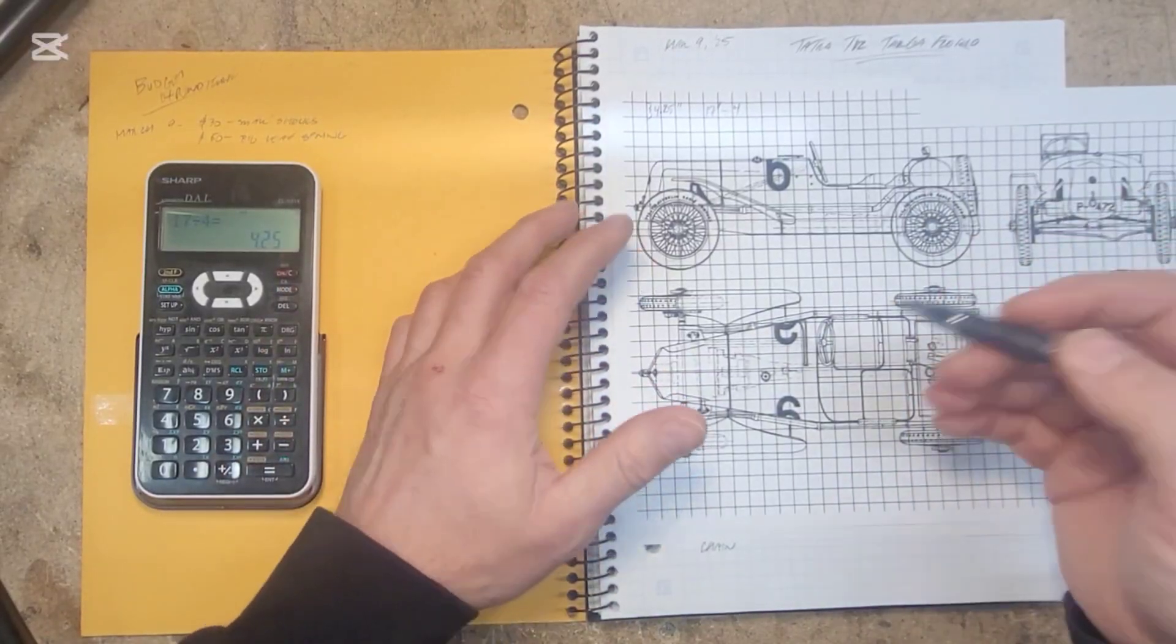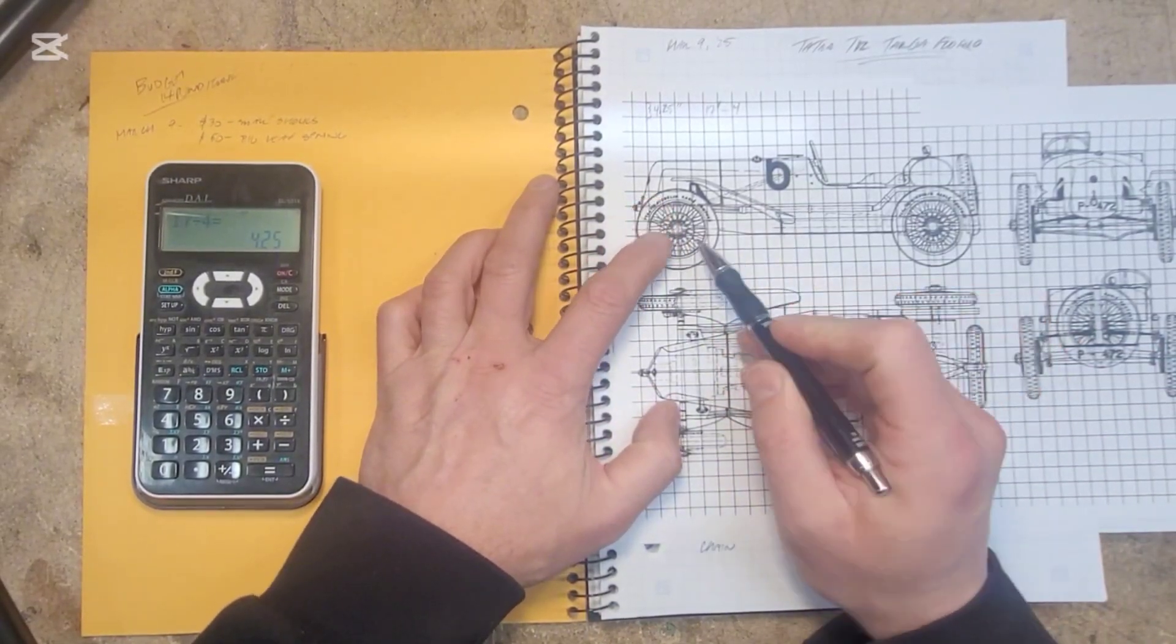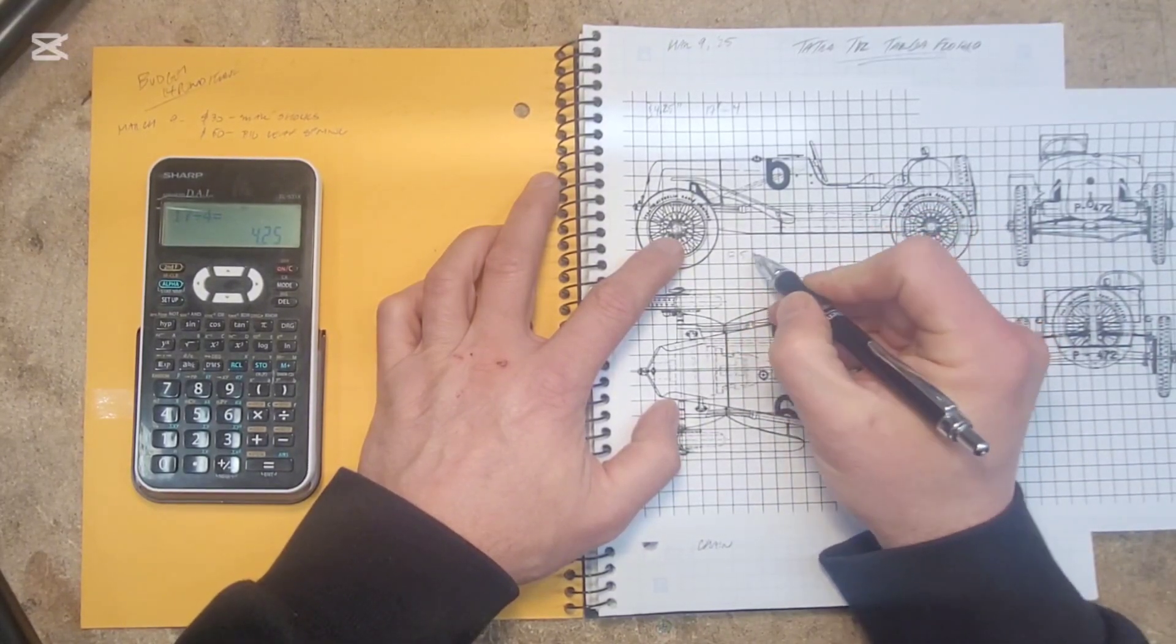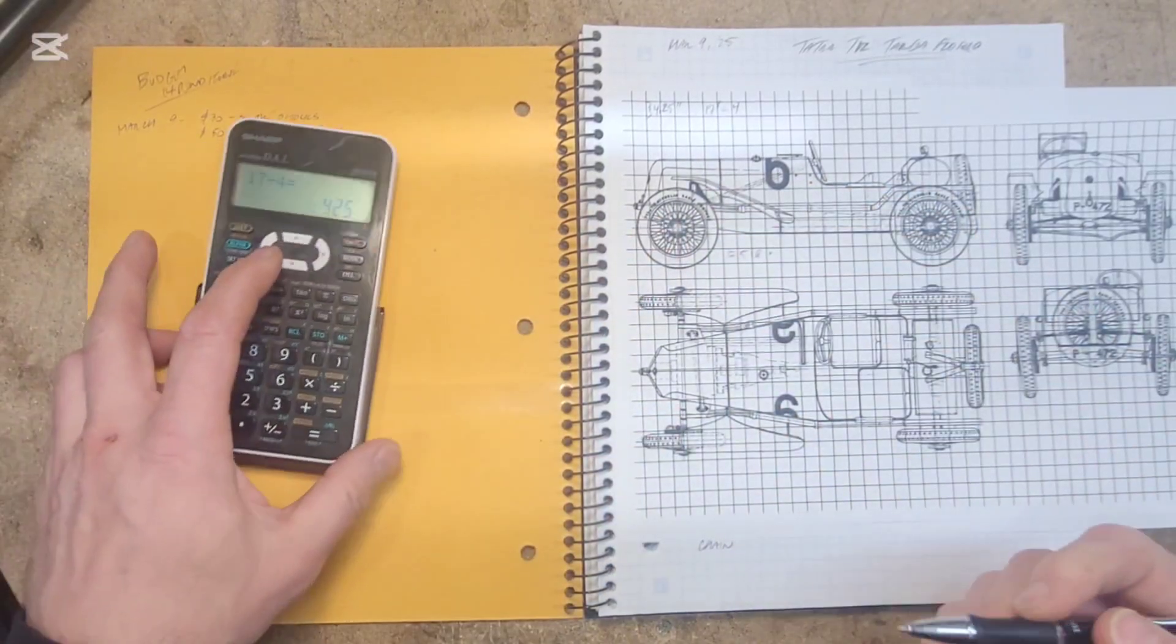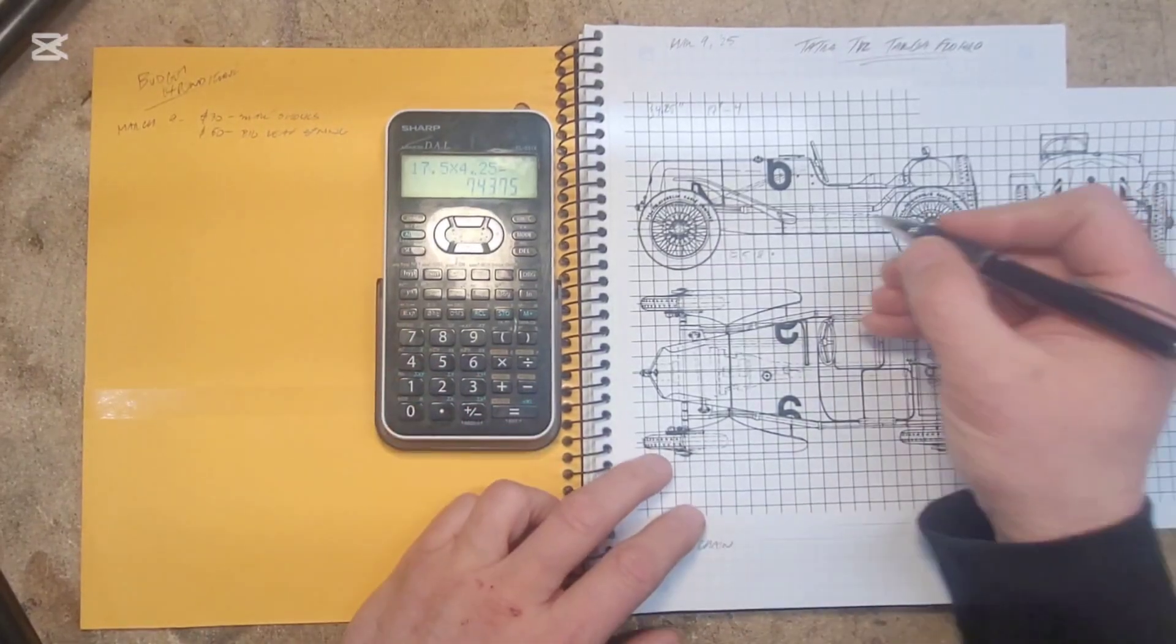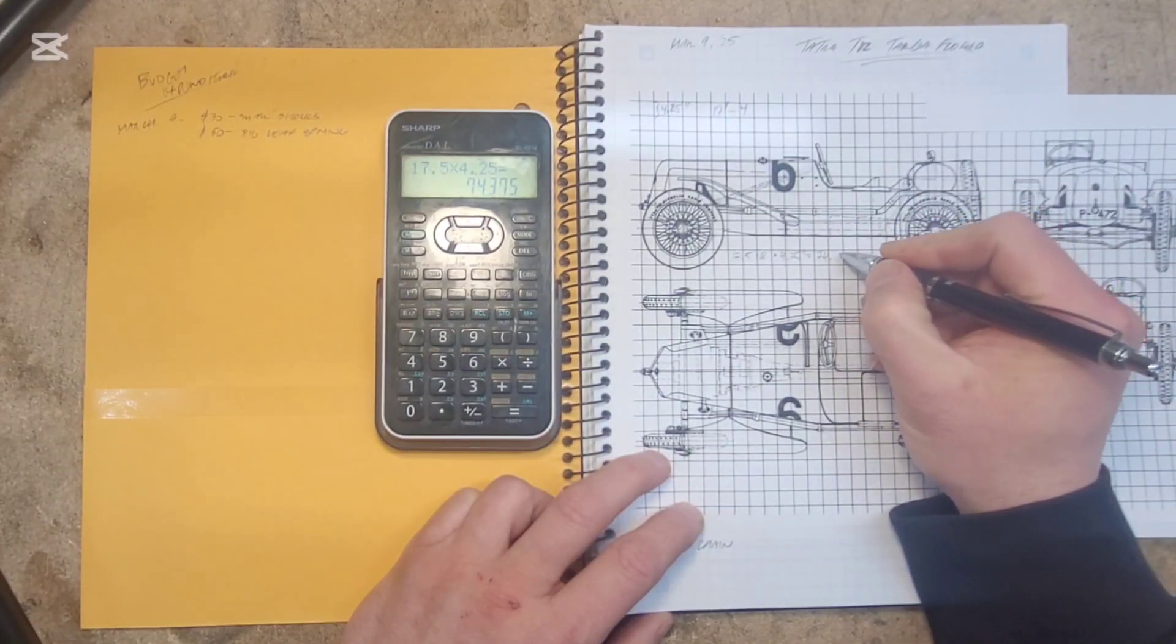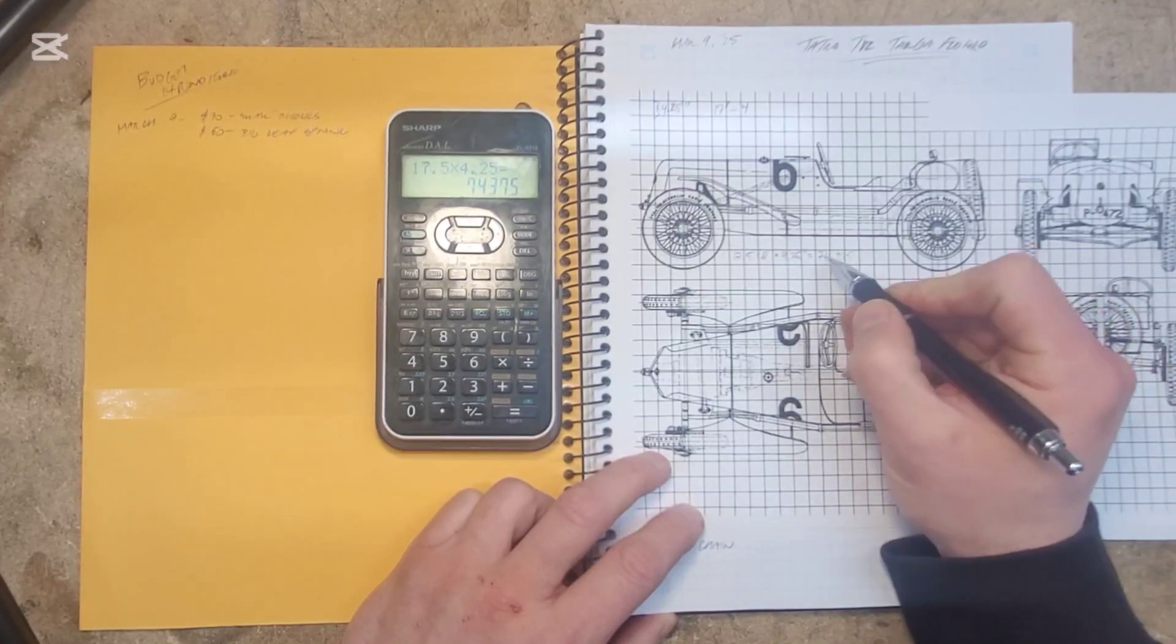Then you can start getting all the measurements you want. You can figure out wheelbase if you just go from the middle of the wheel to the middle of the wheel and count squares: one, two, three, four, five, six, seven, eight, nine, ten, eleven, twelve, thirteen, fourteen, fifteen, sixteen, seventeen and a half. Then you multiply by 4.25 because each square is four and a quarter inches. So 17.5 times 4.25 equals 74.375 inches, that's your wheelbase.